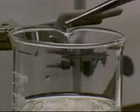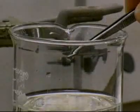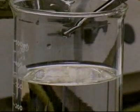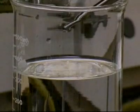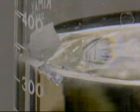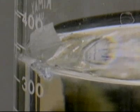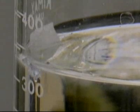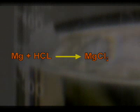Chemical equations are written to describe what happens in a chemical reaction. When magnesium reacts with hydrochloric acid, hydrogen gas is produced. The reaction can be written as: magnesium plus hydrochloric acid produces magnesium chloride plus hydrogen gas. An arrow means yields, or produces.